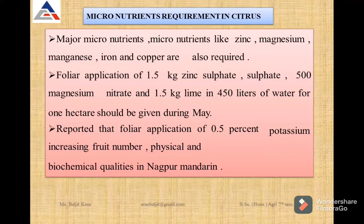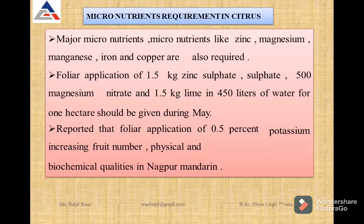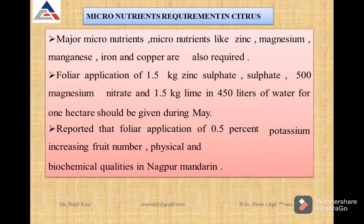Micronutrient requirements in citrus include zinc, magnesium, manganese, iron, and copper. Foliar application of these micronutrients can be applied. For zinc, 1.5 kg of zinc sulfate, 500 grams of magnesium, and 1.5 kg of lime can be added in water and sprayed during the month of May.